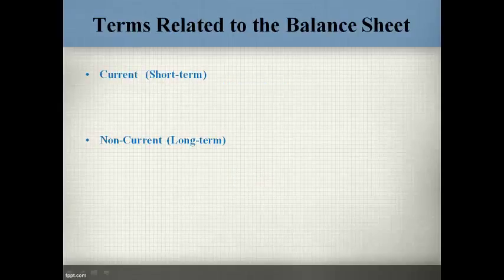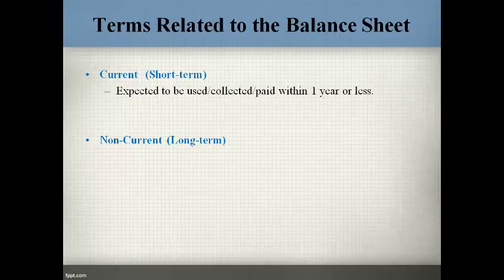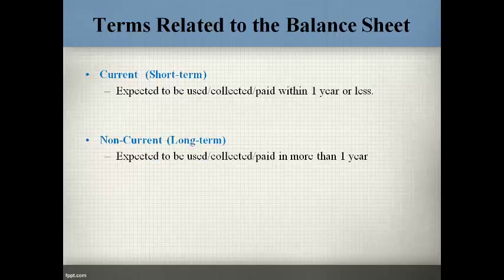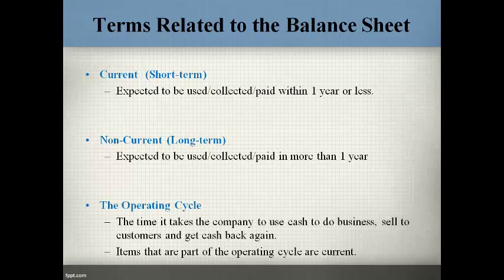Accounts are referred to as current or non-current. Current is expected to be collected, paid, or used within one year or less. Non-current is expected to be collected, paid, or used after more than one year. The operating cycle is the time it takes the company to use cash to do business and get cash back again. Items that occur as part of the operating cycle are considered to be short term.